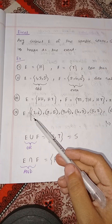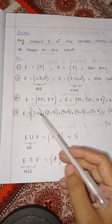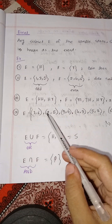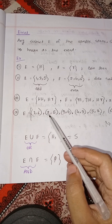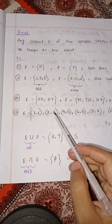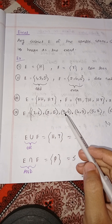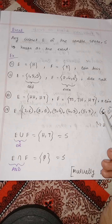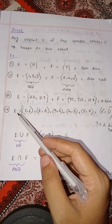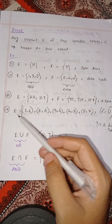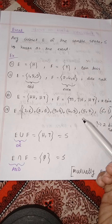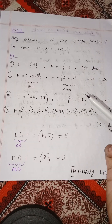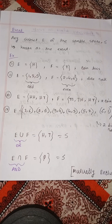Let's identify which outcomes sum to 7. The pairs are: 1 and 6, 2 and 5, 3 and 4, 4 and 3, 5 and 2, and 6 and 1 — giving us 7 each time. So we need to find the subset of the sample space where the event outcomes sum to exactly 7.